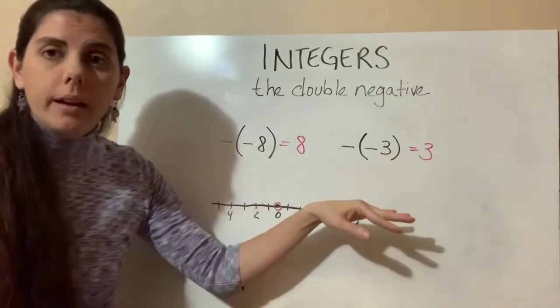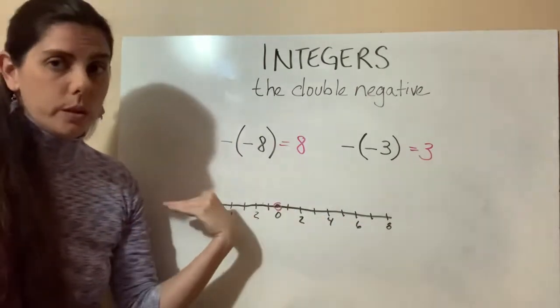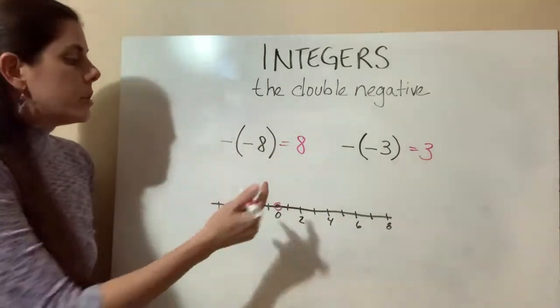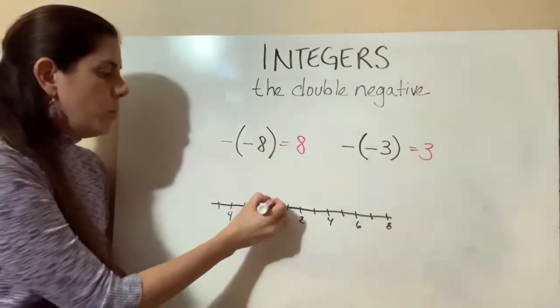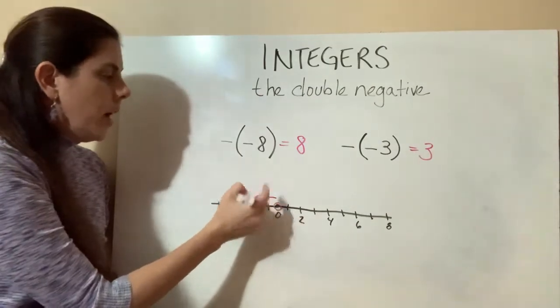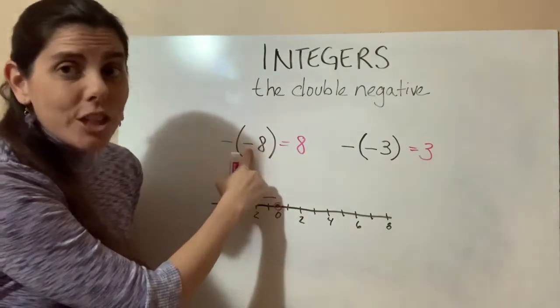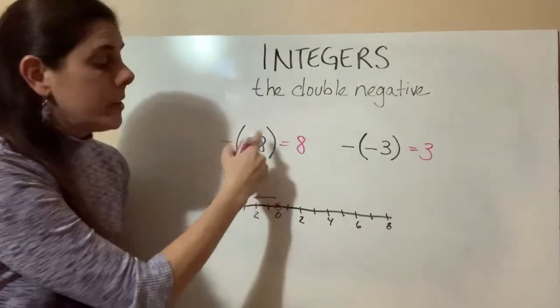So this negative sign actually means we're changing the natural direction. So instead of going our natural way to the right, what we're going to do is switch and go to the left. Our first sign says nope, change, go to the left. But then our next sign is a change sign too, so it says oh nope, we're changing again and we're going back the other way.